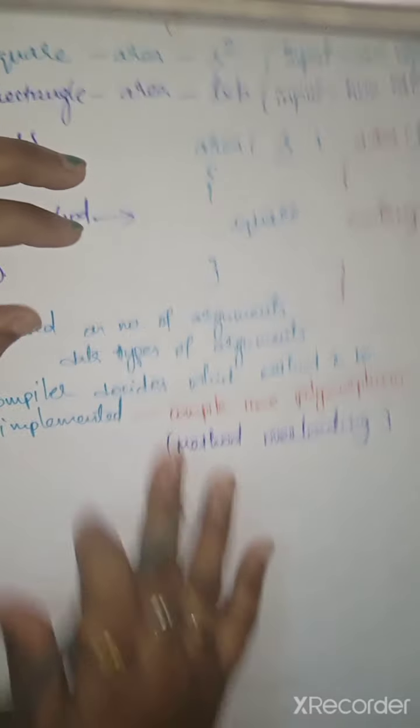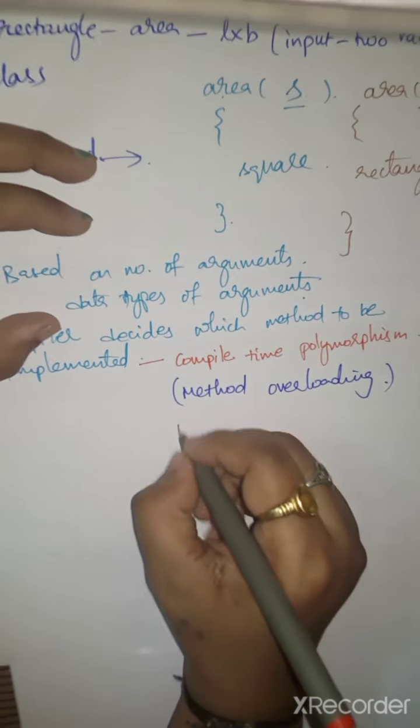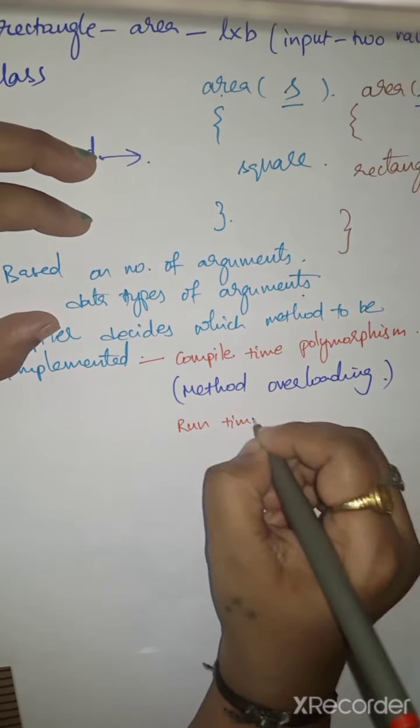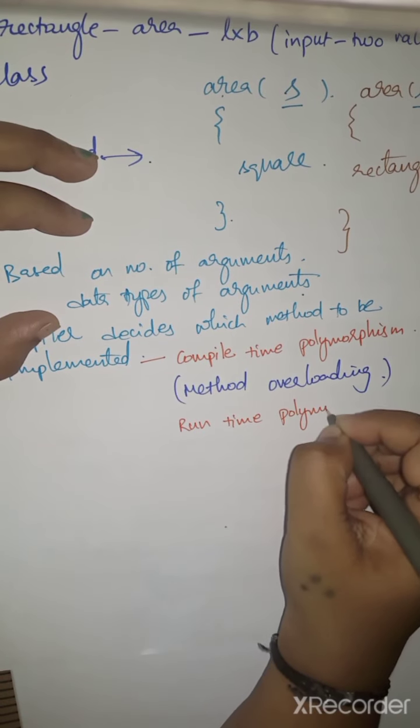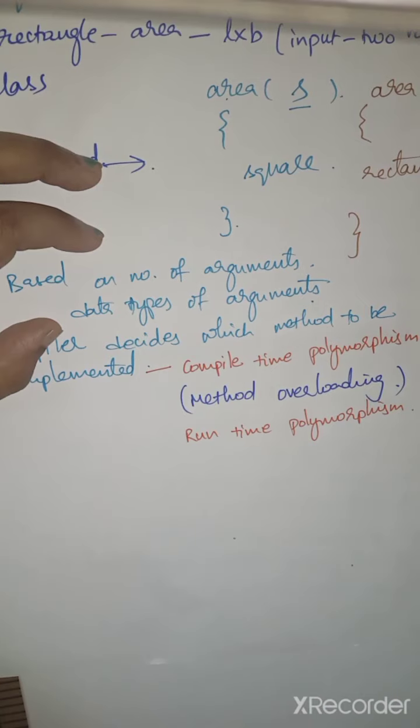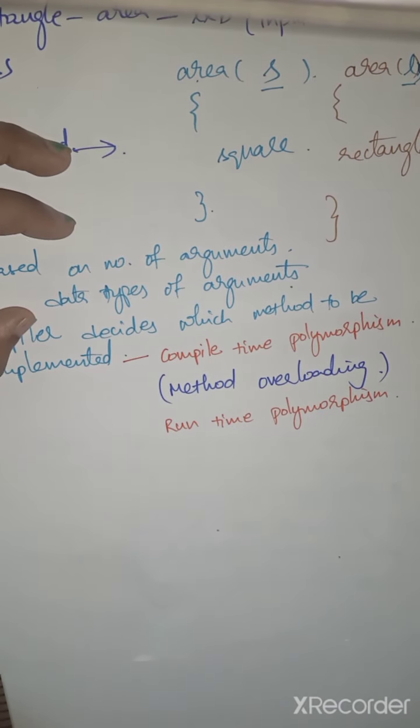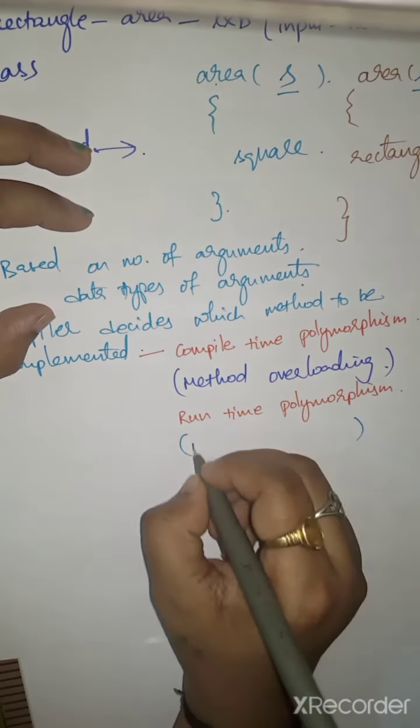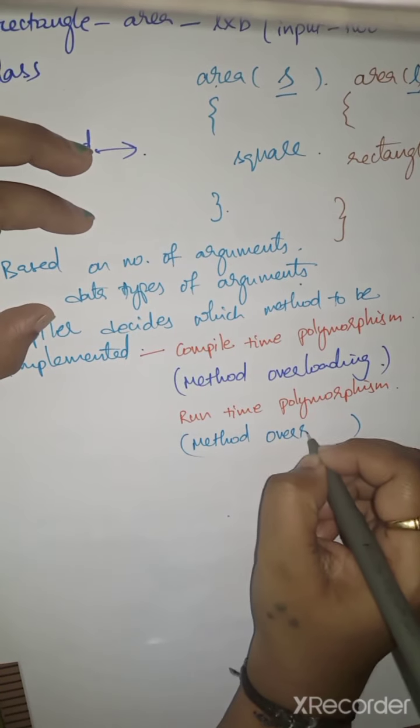There is another type of polymorphism called runtime polymorphism that you will learn in detail under method overriding.